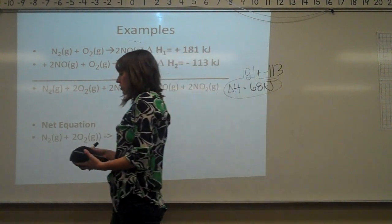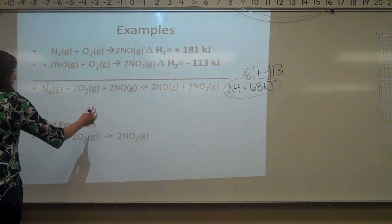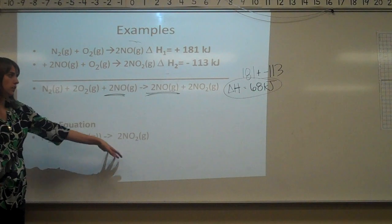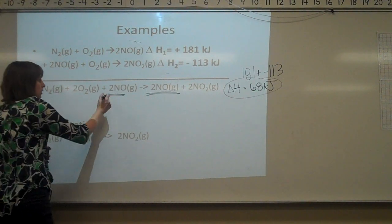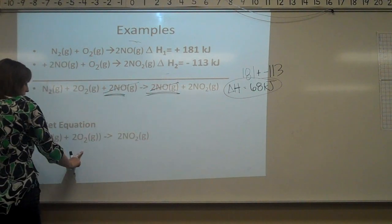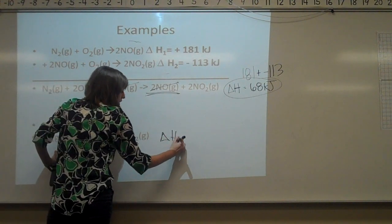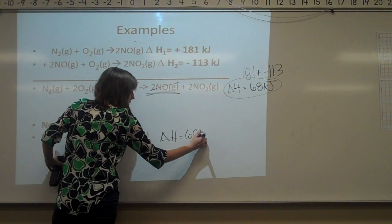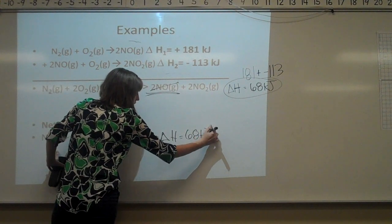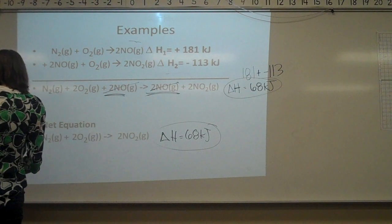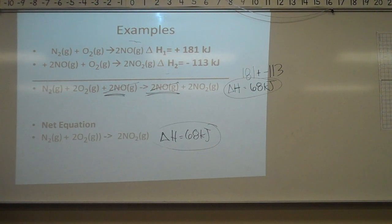When we write our net equation, we notice that NO appears on both the reactant and product sides — those are intermediate states and we can cancel them out. When we write the net ionic equation, we write it without those intermediates, and our delta H doesn't change — it remains 68 kJ.